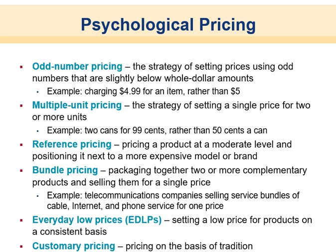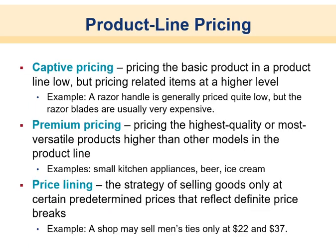Everyday low prices (EDLP) is setting a consistently low price on products — where Walmart made its bread and butter, though Amazon has largely replaced Walmart in that regard lately. Customary pricing is pricing based on tradition. Product line pricing includes captive pricing — pricing the basic product in a line low but pricing related items high, like an inexpensive razor with very expensive replacement blades. Premium pricing involves pricing the highest quality or most versatile products higher than other models in the product line.